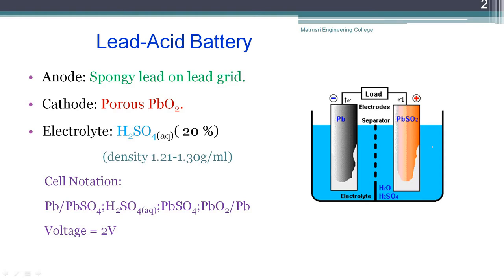Now let us see the construction of this battery. The electrodes are made of lead grids - like mesh wire or baskets. These lead grids are filled with spongy lead and lead dioxide. The anode lead grid is filled with spongy lead, so lead is the anode. The cathode lead grid is filled with lead dioxide paste, so lead dioxide is the cathode. The electrolyte used is generally sulfuric acid, with concentration varying from about 20 to 25 percent, with a density of 1.21 to 1.3 grams per ml.